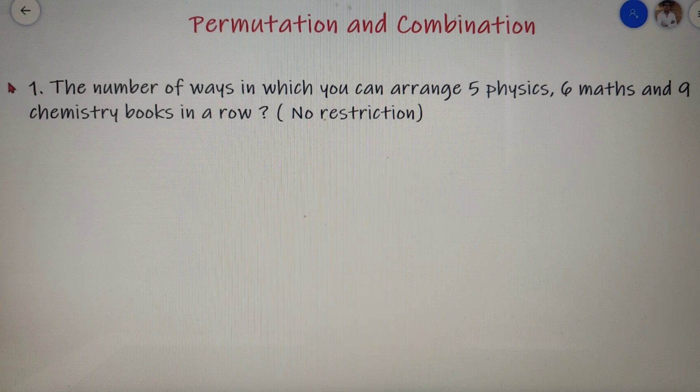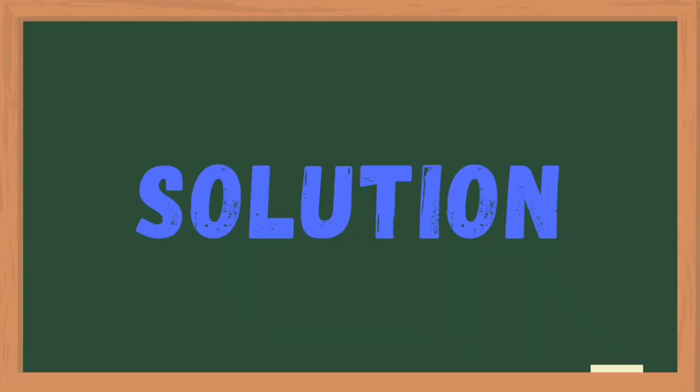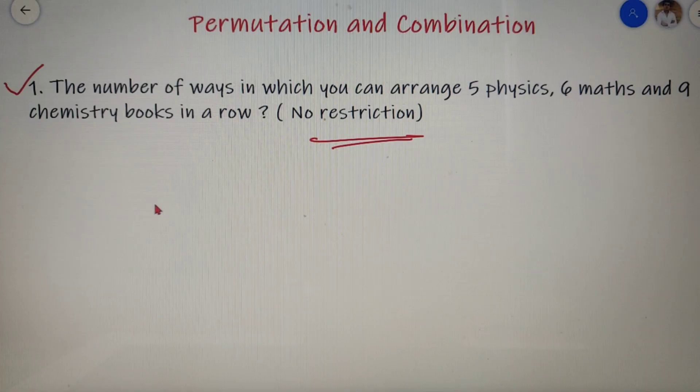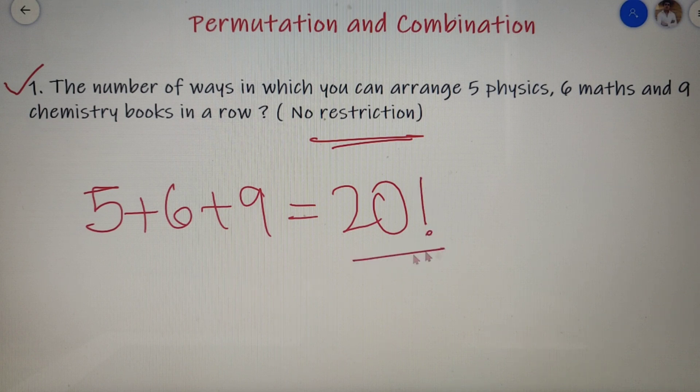The first question says: the number of ways in which you can arrange five physics, six maths, and nine chemistry books in a row, and we are given that there is no restriction. So since there is no restriction, I just have to find how many books are there. In total we have 5 plus 6 plus 9 which is equal to 20 books, so I can arrange 20 books in 20 factorial ways. So my answer is 20 factorial.